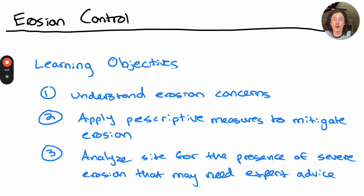The learning objectives for this module are to first, understand the main erosion concerns. Second, apply prescriptive measures to mitigate erosion concerns. And third, analyze your site for the possibility of severe erosion concerns that may necessitate consultation with an expert.